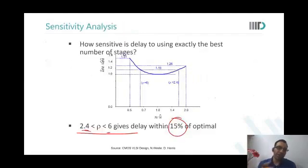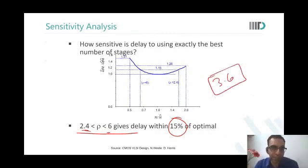So do not get finicky or paranoid about keeping the stage ratio of 3.7 or 3.6 because that is what you found is the best in the logical effort analysis. You will see, depending on your design constraints, you could keep a very wide range of stage ratios and you will still be almost optimal.